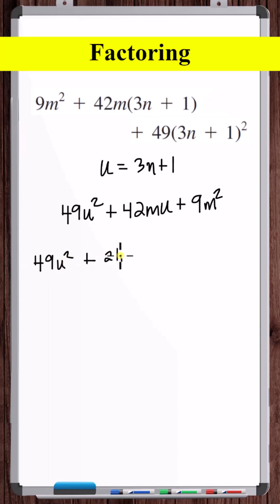Let's separate the middle term into two separate 21s. Now we can apply grouping. Here let's factor out a 7u. Here let's factor out a 3m.